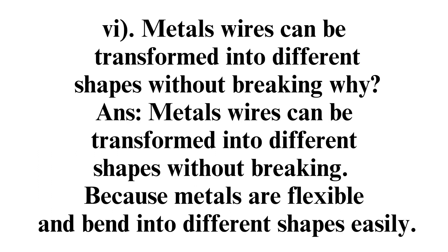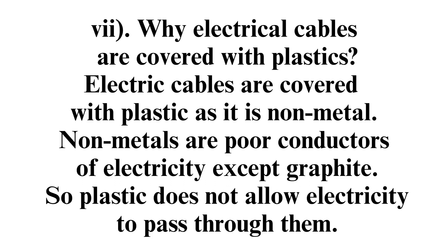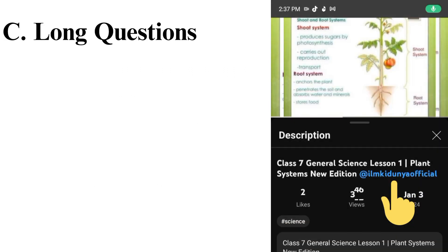Question 6: Wires can be transformed into different shapes without breaking. Why? Answer: Metals and wires can be transformed into different shapes without breaking because metals are flexible and can be bent into different shapes easily. Question 7: Why are electrical cables covered with plastic? Answer: Electrical cables are covered with plastic as it is a non-metal. Non-metals are poor conductors of electricity, except graphite. So plastic does not allow electricity to pass through it.